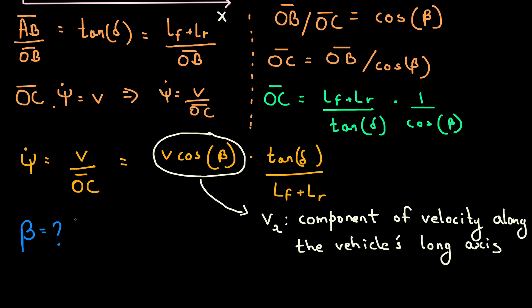So now we have this beta term. It's not an input to the model like steering or velocity. It's not a parameter and definitely not a state of the model. Our states here are x, y, the heading and their derivatives. So we need to do some more math to re-express beta in terms of known entities.